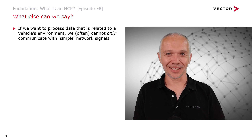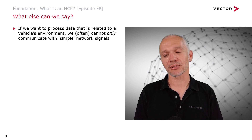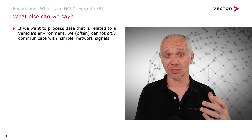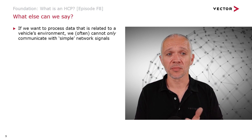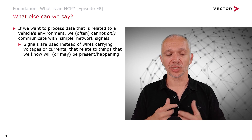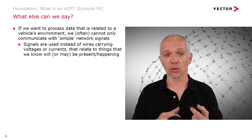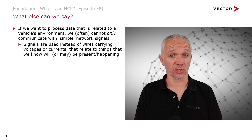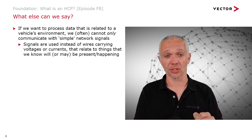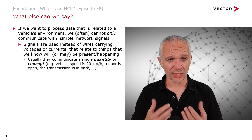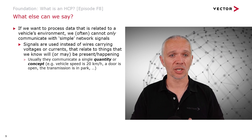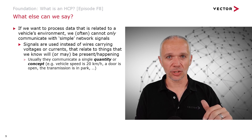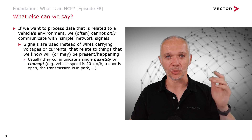If we want to process data related to a vehicle's environment, we often cannot only communicate with simple network signals. In episode F3 about networks in vehicles, we talked about how networks are used to replace wires — wires that carry a voltage or current corresponding to something we know will be present or happening. What we typically have with these kinds of signals is a single quantity or concept: vehicle speed is 20 kilometers an hour, a door is open, transmission is in park, or the ABS ECU needs the engine ECU to temporarily reduce power to stop a wheel spinning.